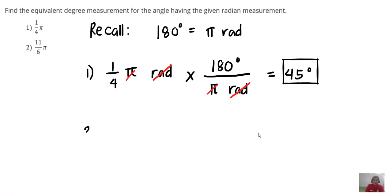For number two, 11 over 6 pi radian, we will do the same. We need to multiply this one by 180 degrees over pi radian.